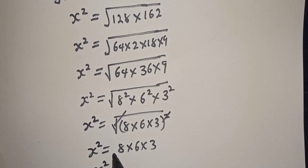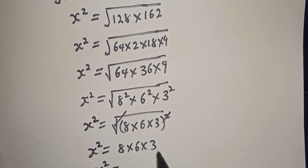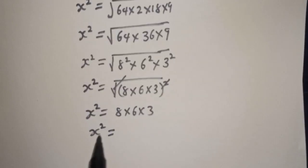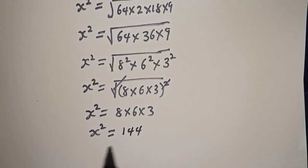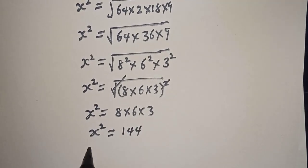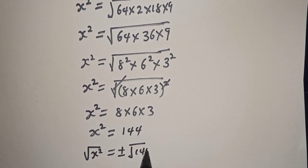x squared is equal to 144. Now let's take the square root of both sides. Square root of x squared is equal to plus or minus square root of 144, which is 12. This is the final answer.